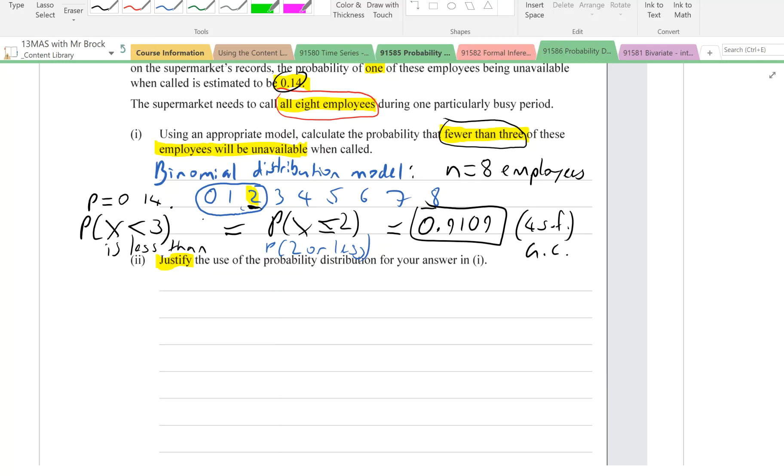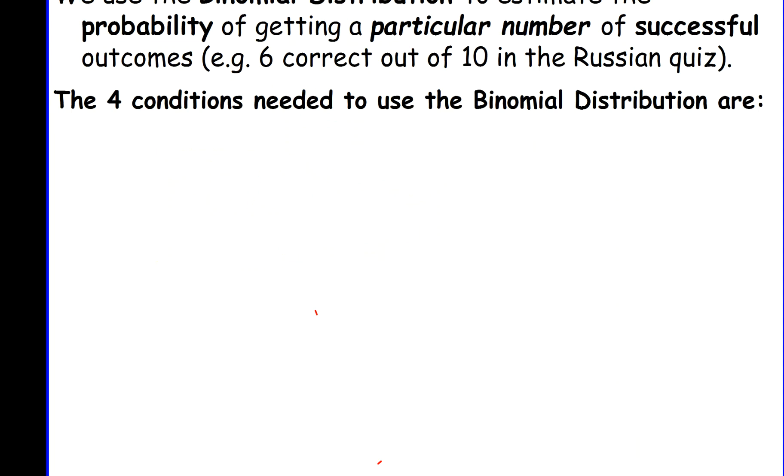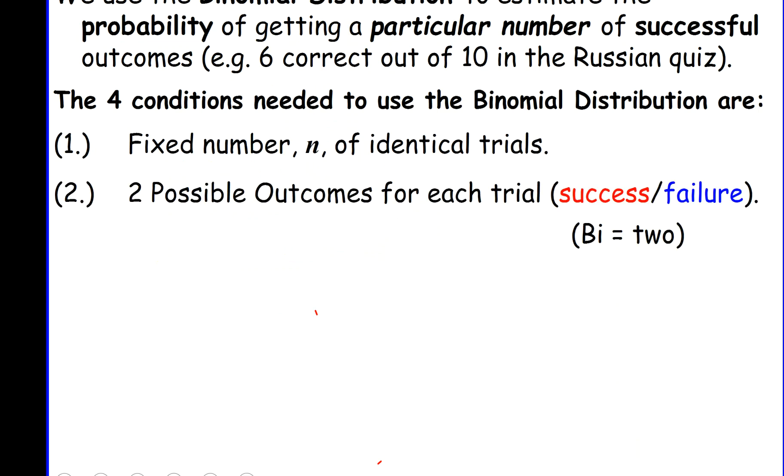If we go back and we think about the requirements of a binomial distribution model, the requirements are, we need to have a fixed number of n identical trials, two possible outcomes for each trial.